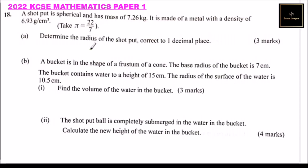Part A: determine the radius of the shot put correct to one decimal place. We have been given the mass and the density. We know that density equals mass over volume, and we are looking for the radius, so we need to find volume equals mass over density.